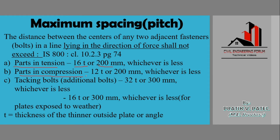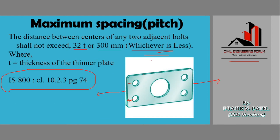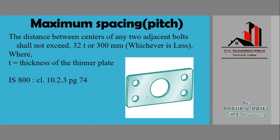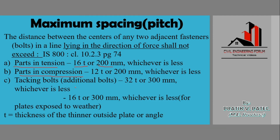For parts in compression, if we have two bolt holes where the part between them may be in compression due to bolt fixing, the maximum spacing (pitch) is 12 times the thickness of the thinner plate or 200 mm, whichever is less.